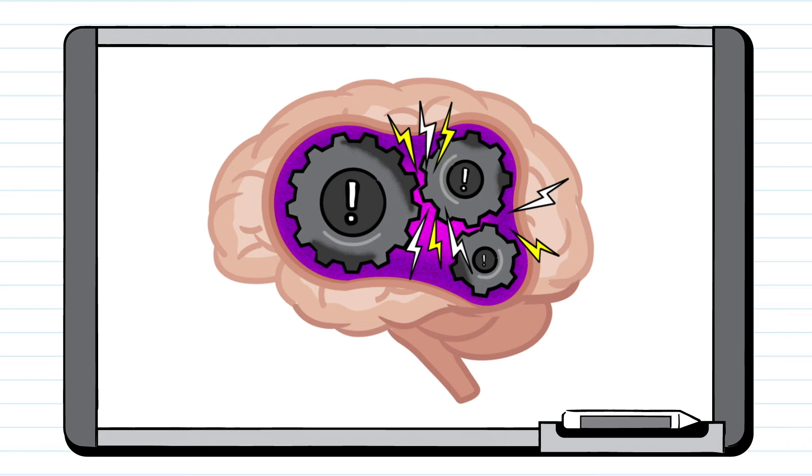An animated woman stands at a whiteboard in front of a classroom of students. An illustration of a brain appears on the board. The brain is composed of three interlocking gears. Four arrows point to the brain as it begins to flash red.